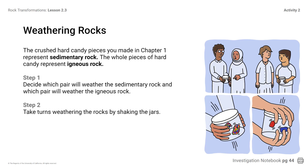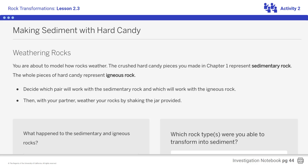The crushed hard candy pieces you made in Chapter 1 represented sedimentary rock. The whole pieces of hard candy represent igneous rock. Step 1: Decide which pair will weather the sedimentary rock and which pair will weather the igneous rock. Step 2: Take turns weathering the rocks by shaking the jars. Students, take turns weathering the rocks.